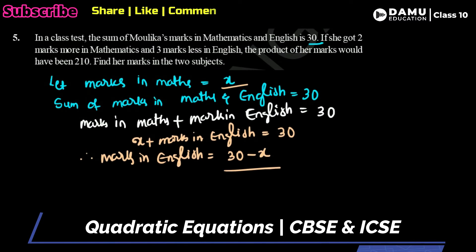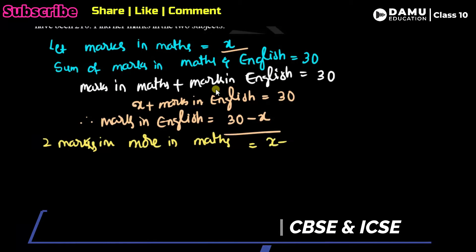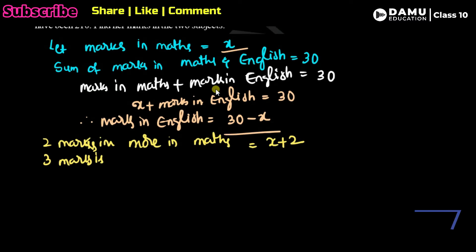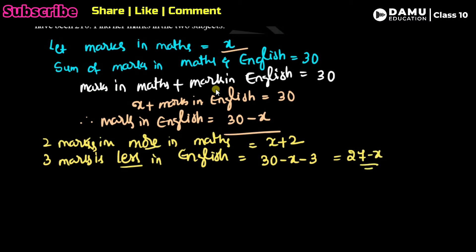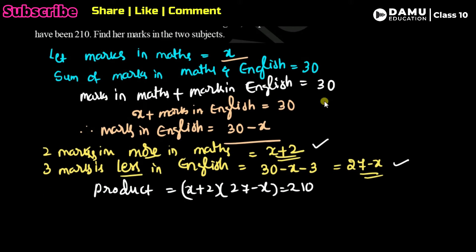Based on the given condition, if she got two marks more in maths, that becomes x plus 2. Three marks less in English means English marks minus 3, which is 30 minus x minus 3, giving us 27 minus x. The product of these modified marks equals 210, so: (x + 2)(27 - x) = 210.